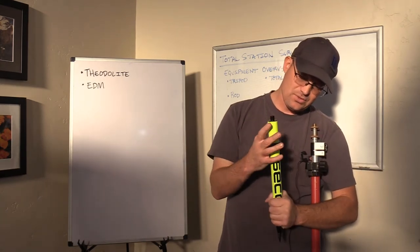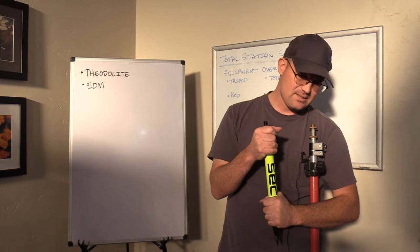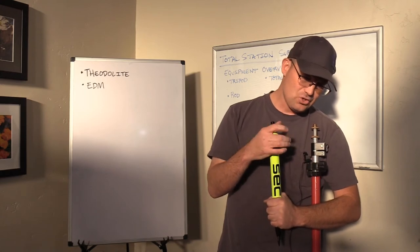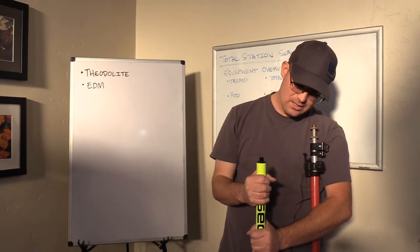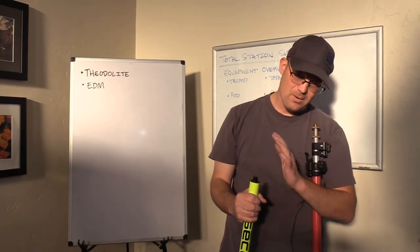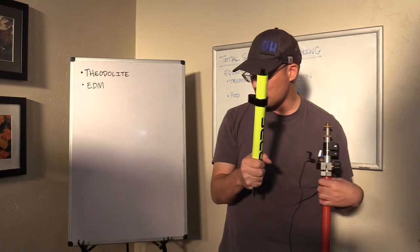The other reason we use this is if we're doing something that needs to be really precise, usually for construction layout, we might use a small rod like this, again, because it gets us close to the ground. And even if the rod's a little bit out of plumb, that error is very small. So this is a short rod.